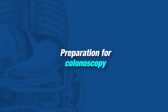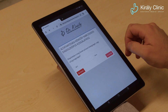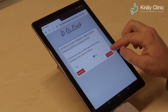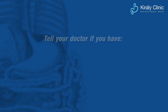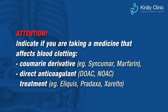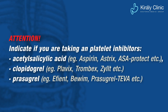During the preparation of the examination, we record your medical history, previous surgeries, illnesses, medications you have taken, and your hypersensitivity reactions to medications. The doctor should be informed about cardiovascular, pulmonary, respiratory, and hormonal comorbidities. It is especially important to tell your doctor if you are taking a drug influencing blood clotting, such as heparin derivatives, new types of direct anticoagulants, or thrombocyte aggregation inhibitors such as clopidogrel or prasugrel. In such cases, taking the above agents should be stopped for a safe intervention.